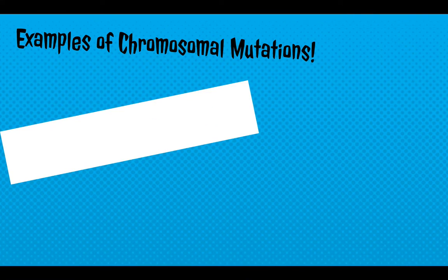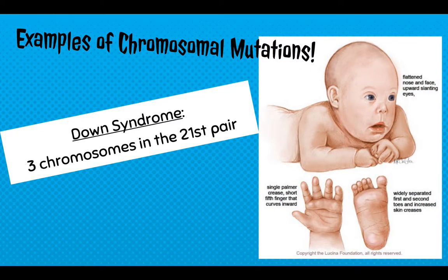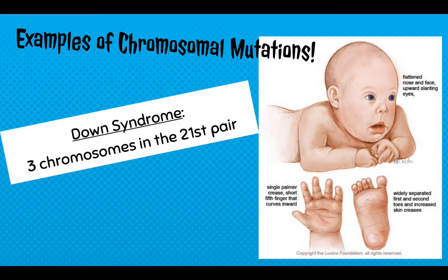The third type is perhaps the more common chromosomal mutation: Down syndrome, or trisomy 21, meaning there are three chromosomes in the 21st pair. Characteristics include unique facial features, a flattened face, upward slanting eyes, and unique features in the hands and toes. One extra chromosome in that 21st pair results in many effects, and all of it is caused by non-disjunction in meiosis — not getting the right number of chromosomes in the egg or sperm cell.